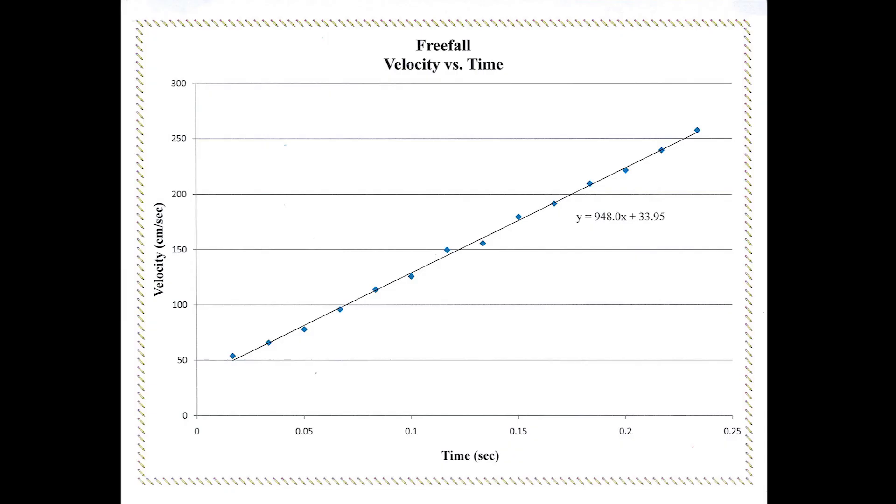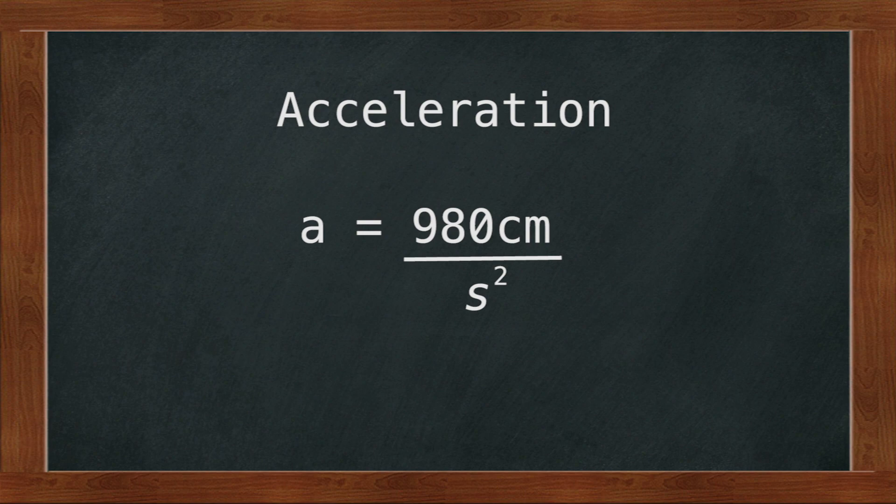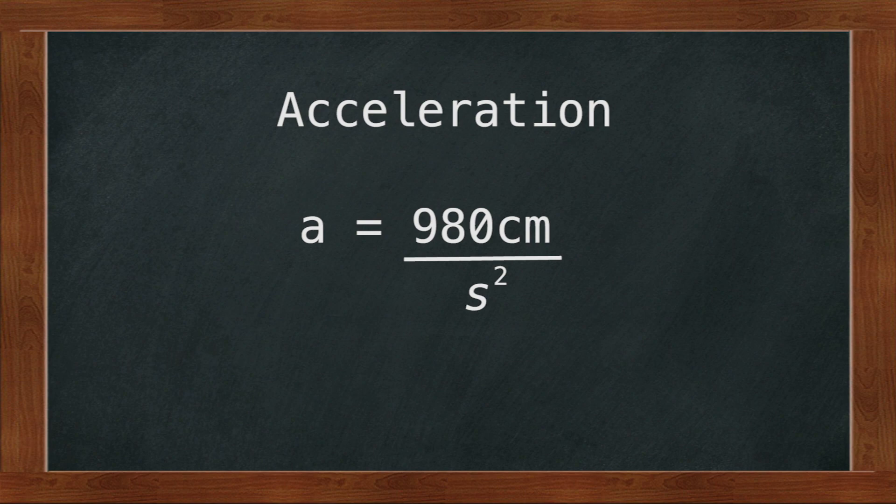Since the acceleration in our experiment is due to gravity alone, the value of our slope should give us the value of the acceleration due to gravity, approximately 980 centimeters per second squared. And we're done. Have fun.